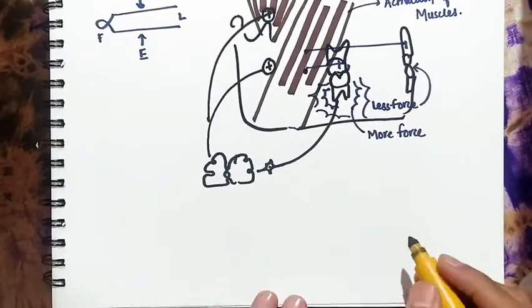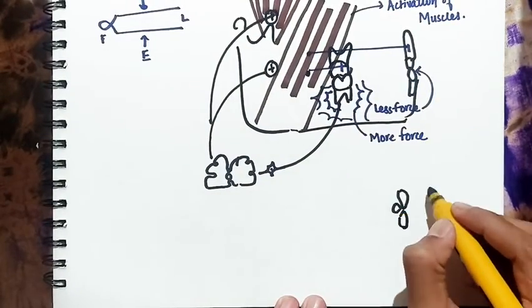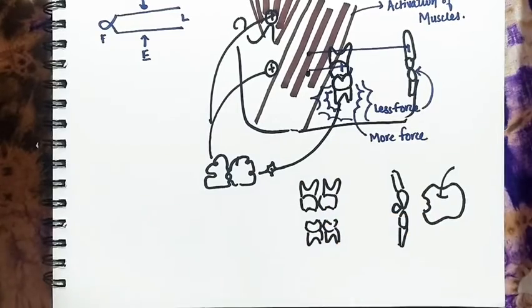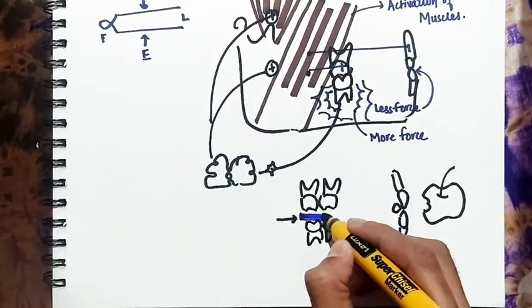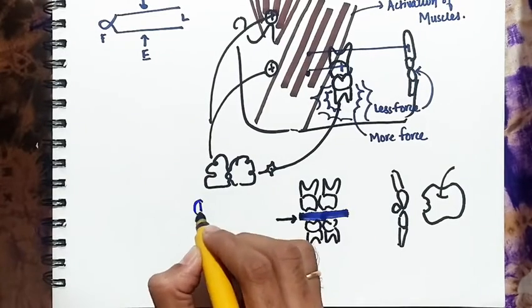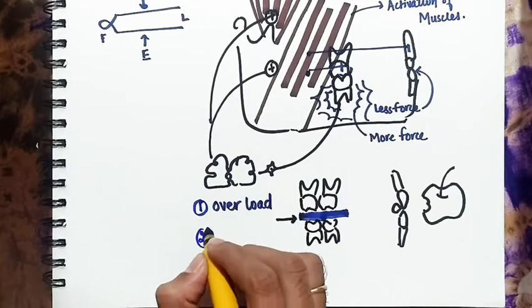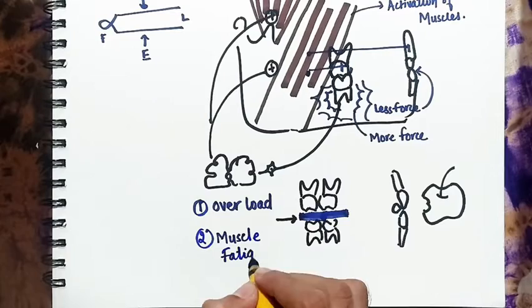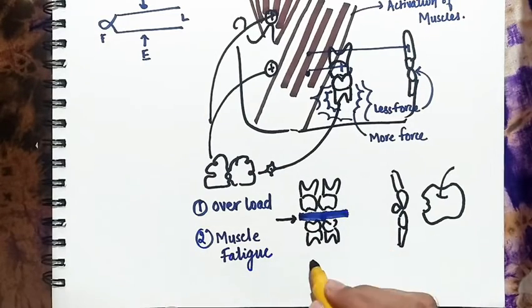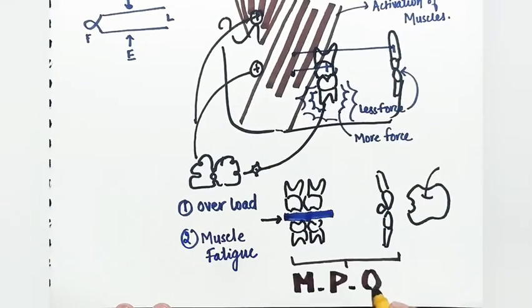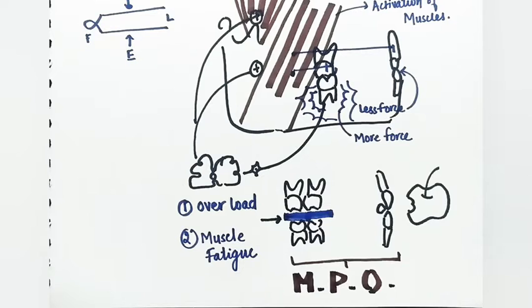Now suppose you bite an apple from anterior teeth. At this moment we don't need posterior teeth to be contacting because one, they will be unnecessarily overloaded and two, muscle will be unnecessarily activated leading to the fatigue of the muscles. This type of scheme where anterior teeth protect the posterior teeth in eccentric movements and conversely the posterior teeth protect the anterior teeth in maximum intercuspation is called mutually protected occlusion.